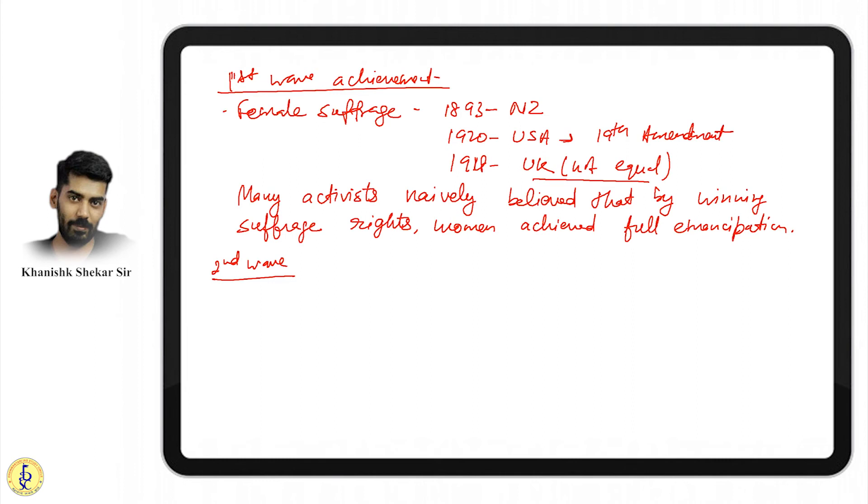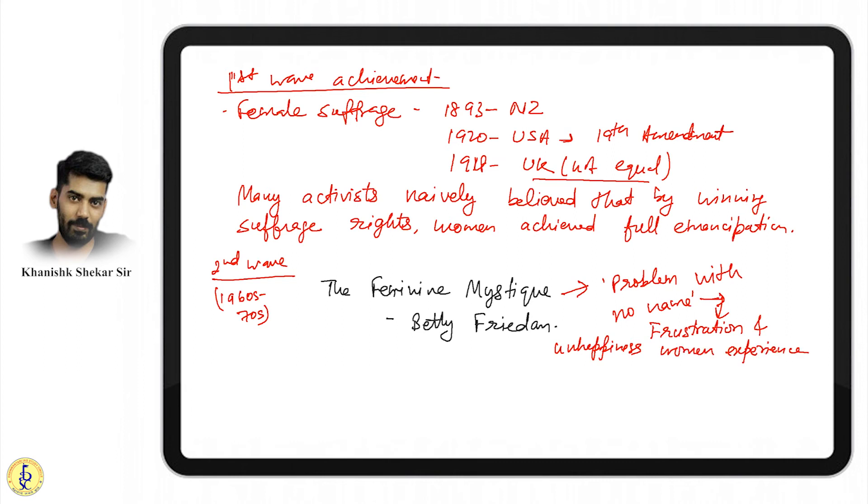The second wave began with an important book, The Feminine Mystique by Betty Friedan, discussing the problem with no name from the 1960s to 70s. This was the frustration and unhappiness women experience as they are confined to the house and the role of housewives.